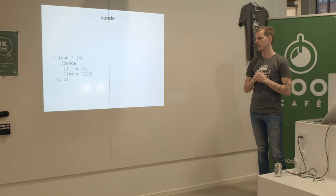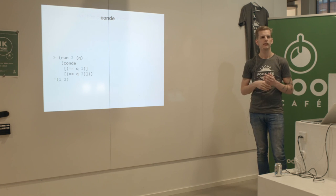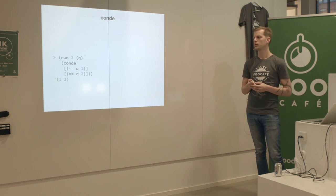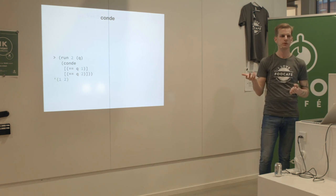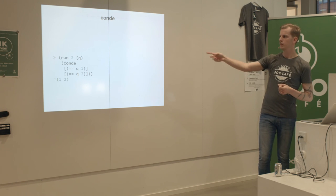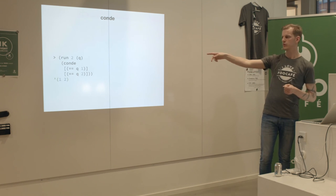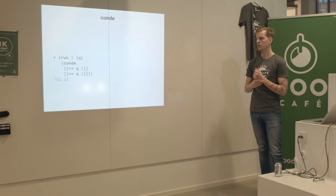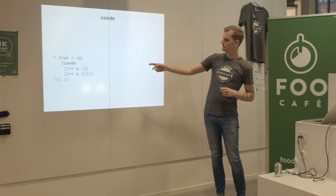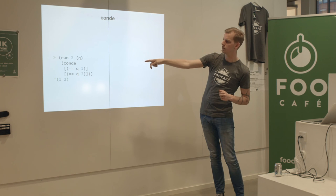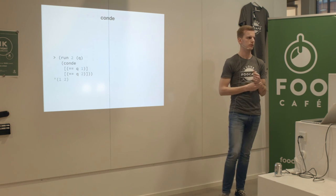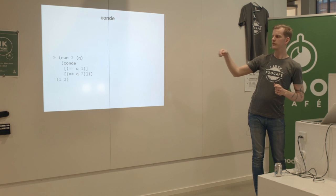The 'conde' disjunction is used for getting multiple answers. We say Q could be one, or Q could be two. Running with two answers, we get both back. Inside run and fresh you get an implicit conjunction - logical AND - so everything must succeed. Here we say Q is unified with two, then in the conde, Q could be one or two. As Q is already two, the first case fails, only the second succeeds, so we get two back.